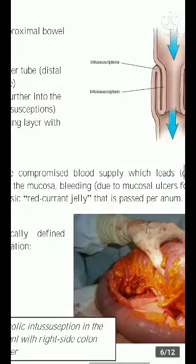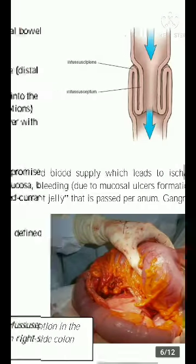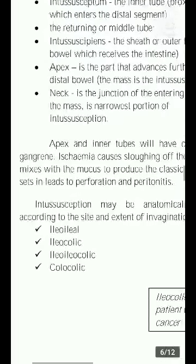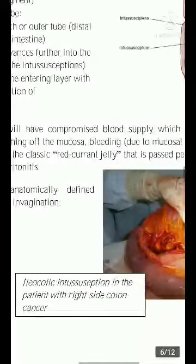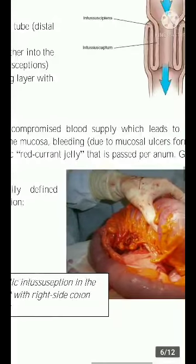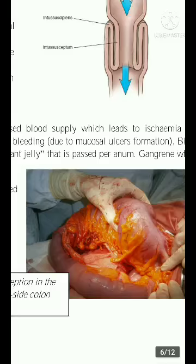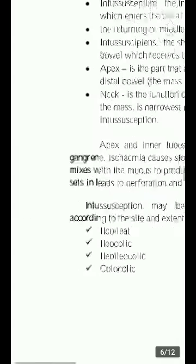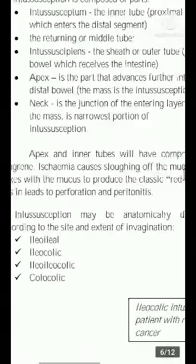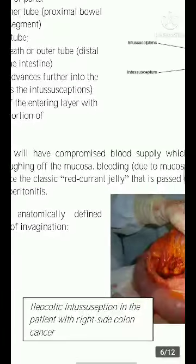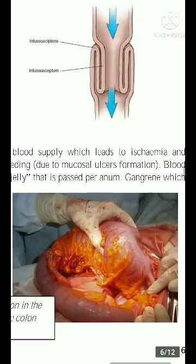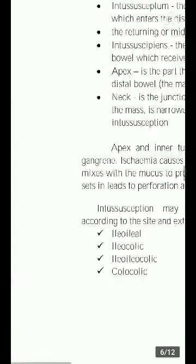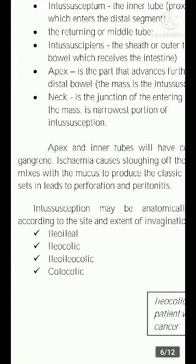The intussuscipiens and intussusceptum — the apex and inner tubes — will have compromised blood supply, which leads to ischemia and gangrene. Ischemia causes sloughing off of mucosa and bleeding due to mucosal ulcer formation. Blood mixes with mucus to produce the classic red currant jelly stool that is passed per anum. Gangrene, when it sets in, leads to perforation and peritonitis.